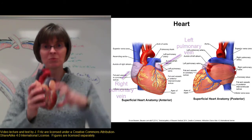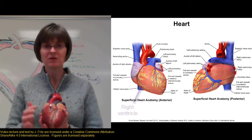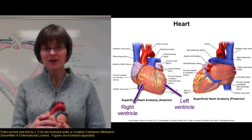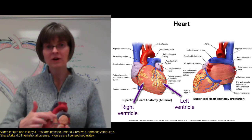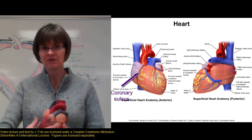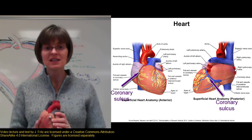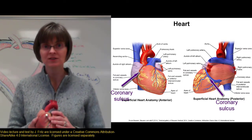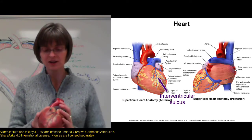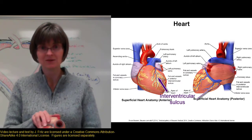The atria then contract and push blood into the ventricles. We have two ventricles — a right ventricle and a left ventricle. On the outside of the heart, you can see we have a coronary sulcus. That's this groove here between the atria and the ventricles. You can see it on the back as well — the coronary sulcus. And you can see the interventricular sulcus that goes between the two ventricles, so you can see the right ventricle and the left ventricle. That does continue around the back as well.